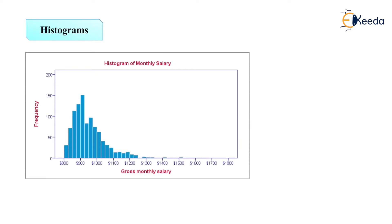Next comes the second technique, that is histogram. That is also very important. Histogram is used to compare values through which we can compare two or three values together. This is a histogram where we are comparing the gross monthly salary with the frequency and through that we are displaying the histogram of monthly salary.